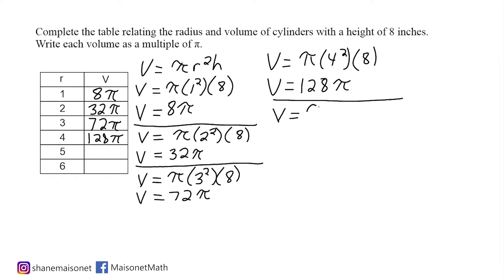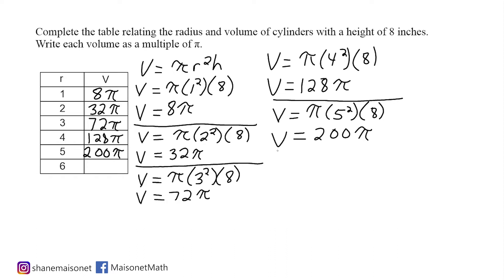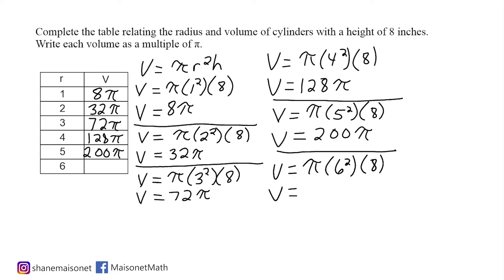The next cylinder has a radius of 5, so we have to square 5 and multiply by 8. 5 squared is 25, and 25 times 8 is 200, so we have a volume of 200 pi when we have a radius of 5 and a height of 8. The last input shown in our table is 6, so we square 6 and multiply by 8: 6 squared is 36, and 36 times 8 is 288, so the volume is 288 pi.